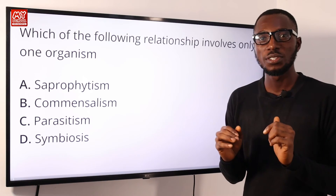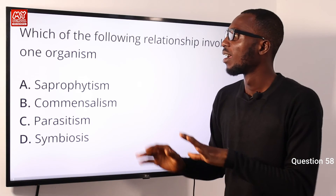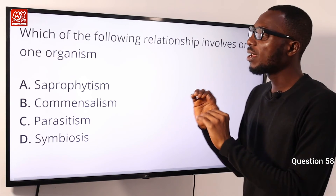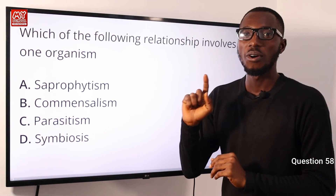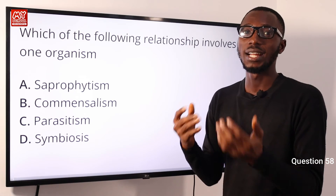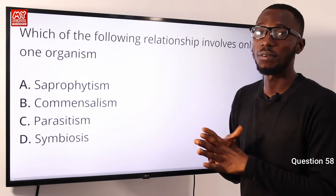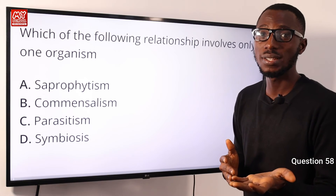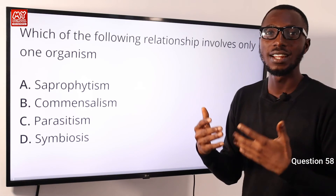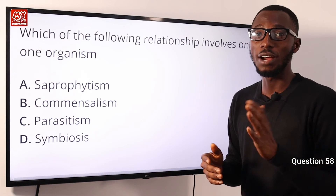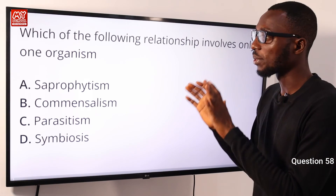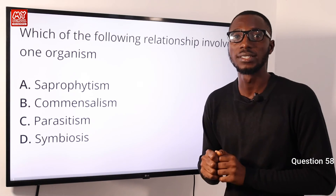Question 58: Which of the following relationships involves only one organism? The correct option is saprophytism. When you see certain organisms like cheese mold, mushroom, and others — they get energy or food from dead or decaying matter. So option A is very correct.